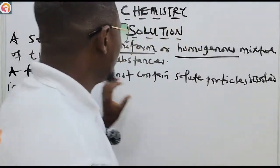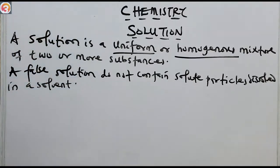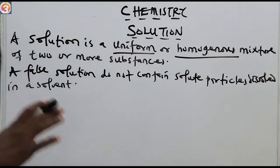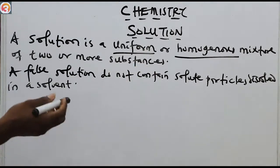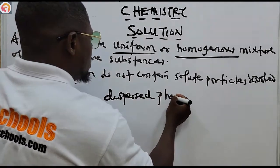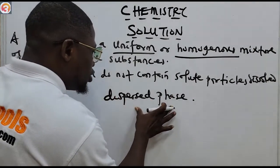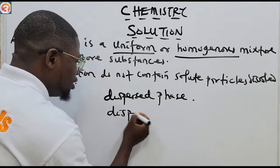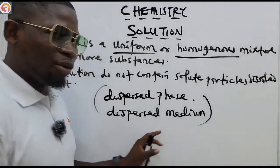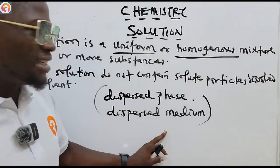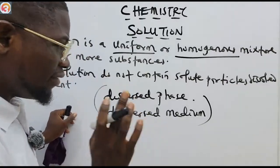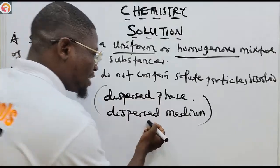In a false solution, we do not call the components solute and solvent. Instead, the substances are called the dispersed phase, and they are dispersed in what is called the dispersed medium. The dispersed phase is like the solute, and the dispersed medium is like the solvent of a true solution.